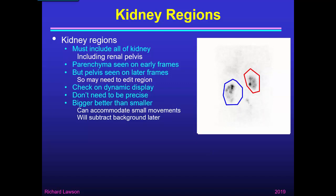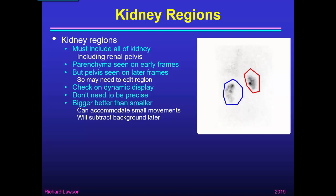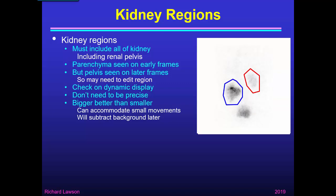If the region is too small, that's obviously no good, because if we leave out some of the kidney, we will underestimate true function. But if the region is bigger than the kidney, as long as it includes all of the kidney, it will accommodate small movements if the patient doesn't keep perfectly still. The only disadvantage of a big region is that it includes a little extra background, but if we subtract background later on, that doesn't matter.